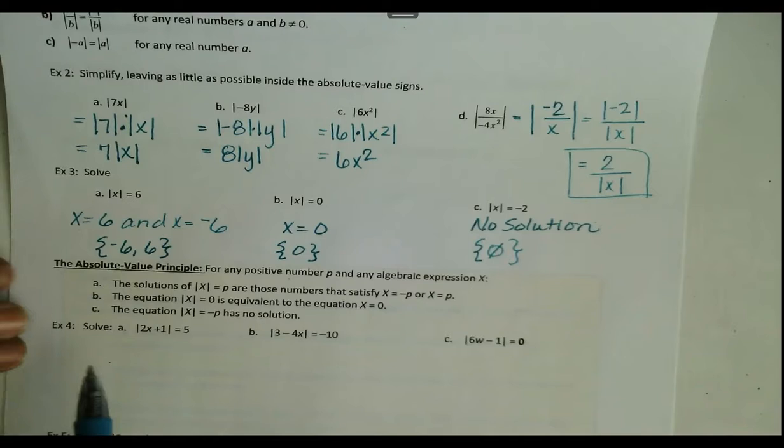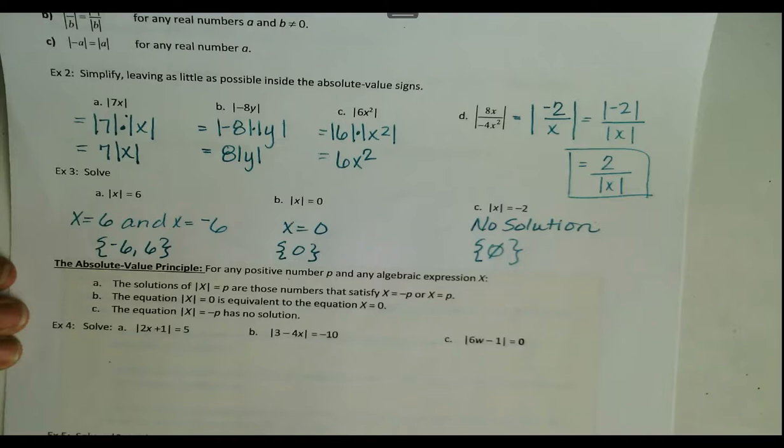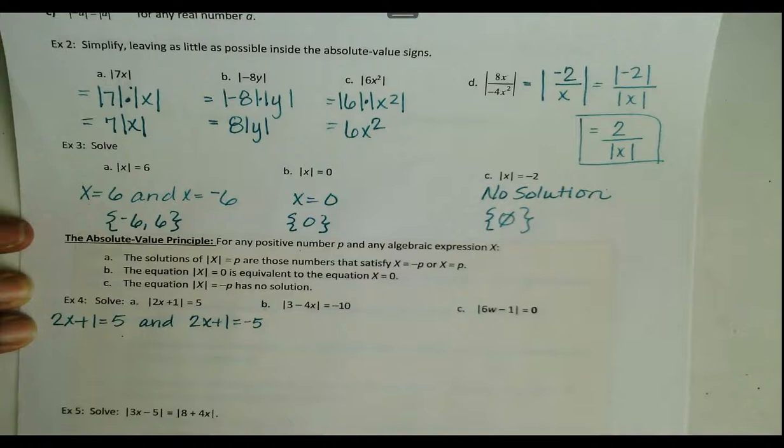Let's look at these four examples. For example one, we have the absolute value of 2x + 1 equals 5. Whatever 2x + 1 is, it's 5 units from 0, so 2x + 1 could equal 5 or negative 5 — two equations to solve. You simply solve each: subtract 1 from both sides, then divide by 2 on both sides.